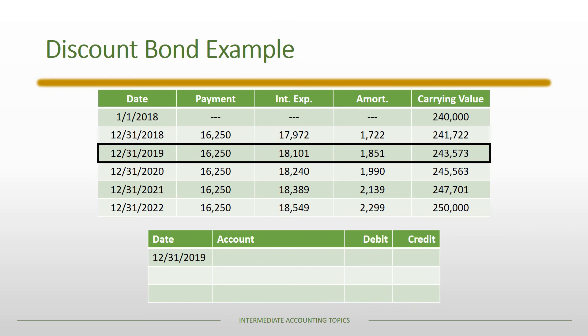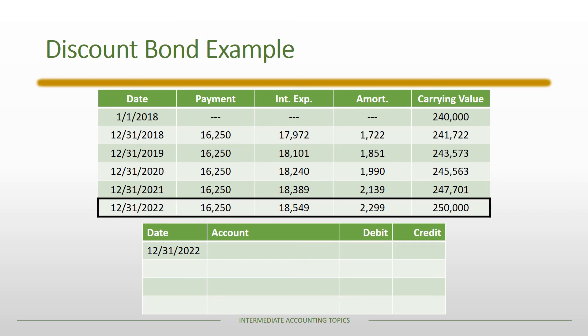For the next year, 12/31/2019, the approach is the same but amounts change slightly. The cash payment remains $16,250, the amortization of the discount is now $1,851, and together they give an interest expense of $18,101.